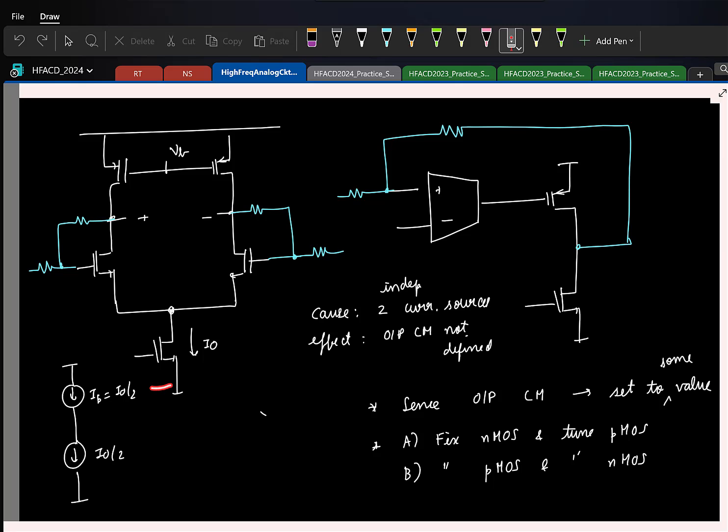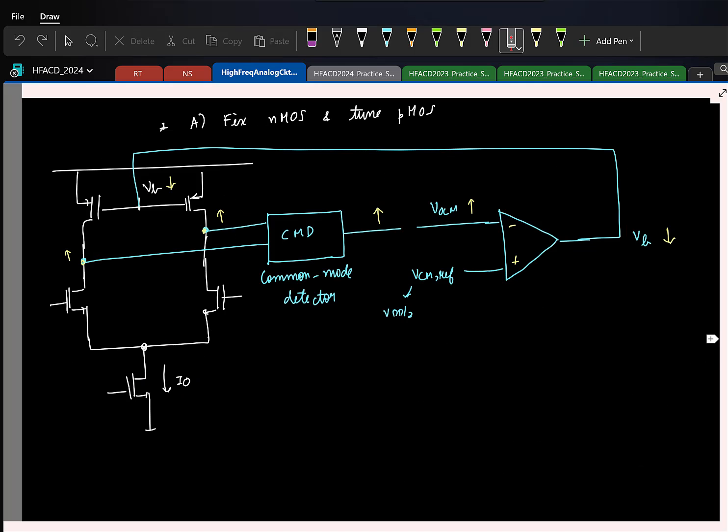Which meant that this node voltage was not defined. The fix was to basically sense the output common mode and set it to a required value by fixing only one independently and tune the other based on the first one. This is just a fancy way of saying that I am taking the average of the voltages.